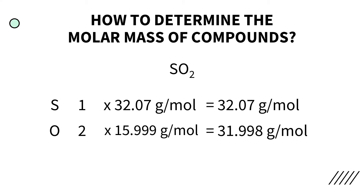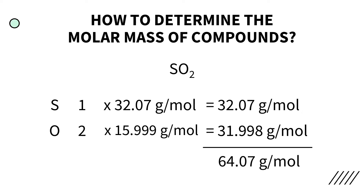After multiplying these values, we now add the molar masses of each element. We get 64.07 grams per mole, and that would be the molar mass of sulfur dioxide.